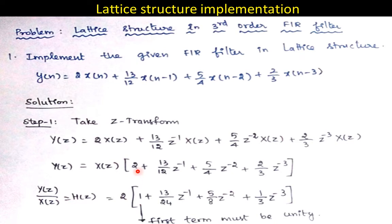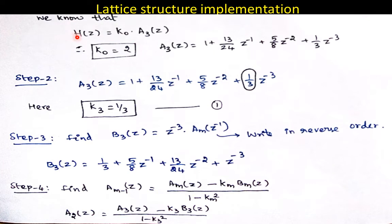The first term of the polynomial must equal 1. To achieve this, factor out 2 as k0, dividing all remaining coefficients by 2. This rewrites H(z) = k0 · A3(z) where k0 = 2. From A3(z), the filter coefficient k3 is simply the coefficient of z⁻³, giving k3 = 1/3 (equation 1). This k3 value will be used in the lattice structure.